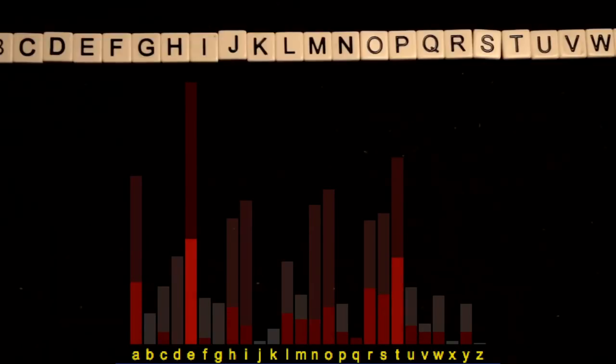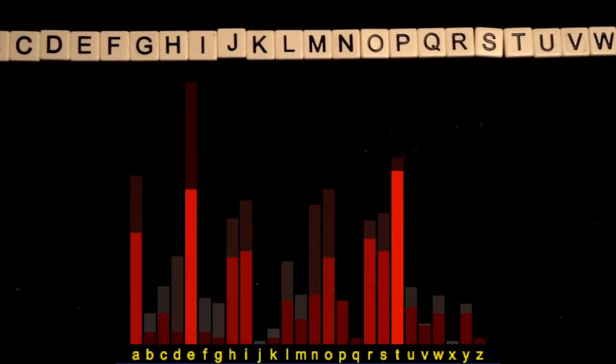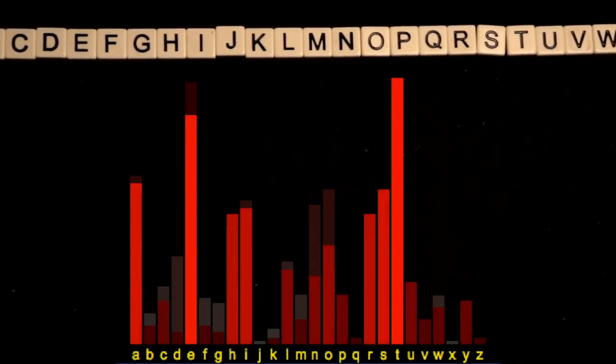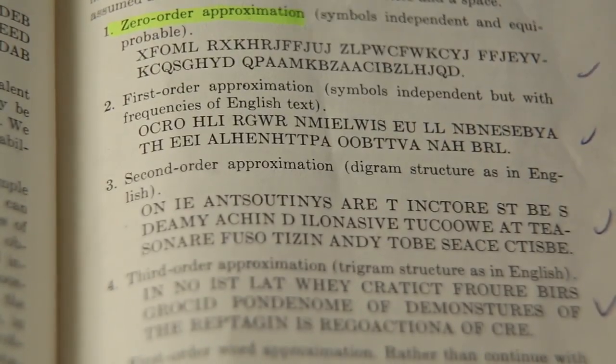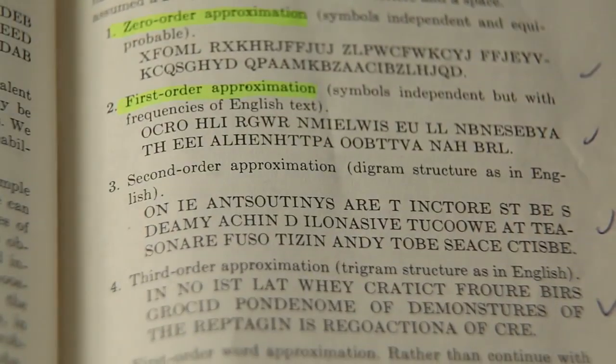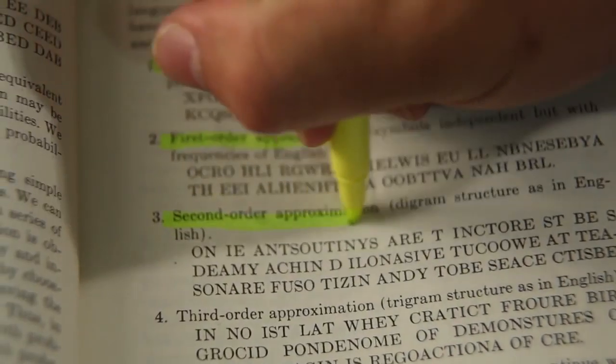Next, Shannon applies this exact same logic to actual English text using known statistics for letters, pairs, and trigrams. He shows the same progression from zeroth order random letters, to first order, second order, and third order sequences.